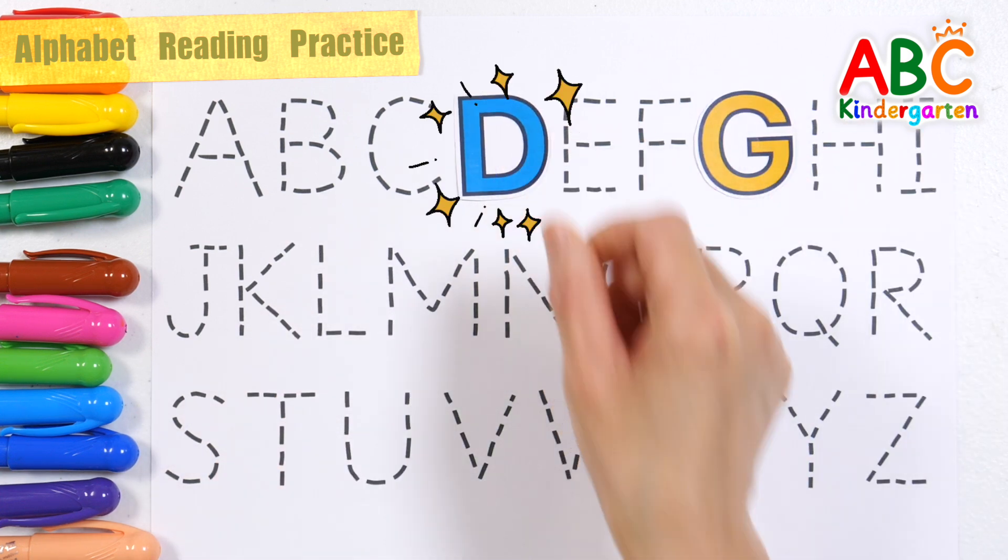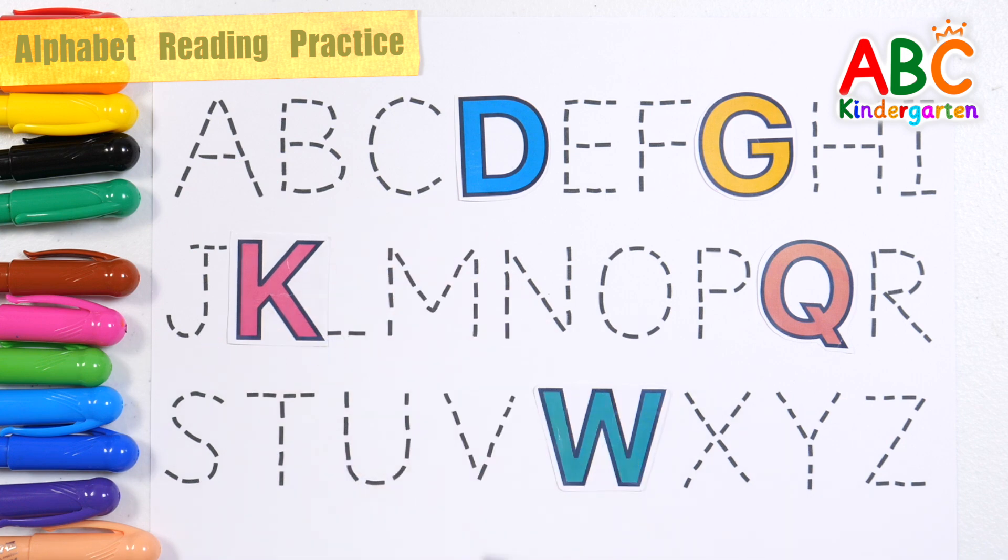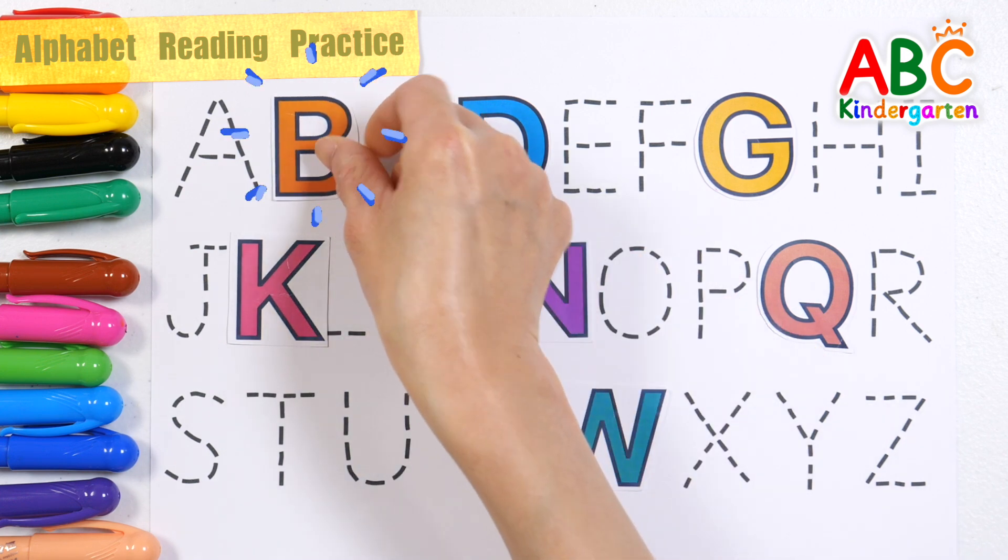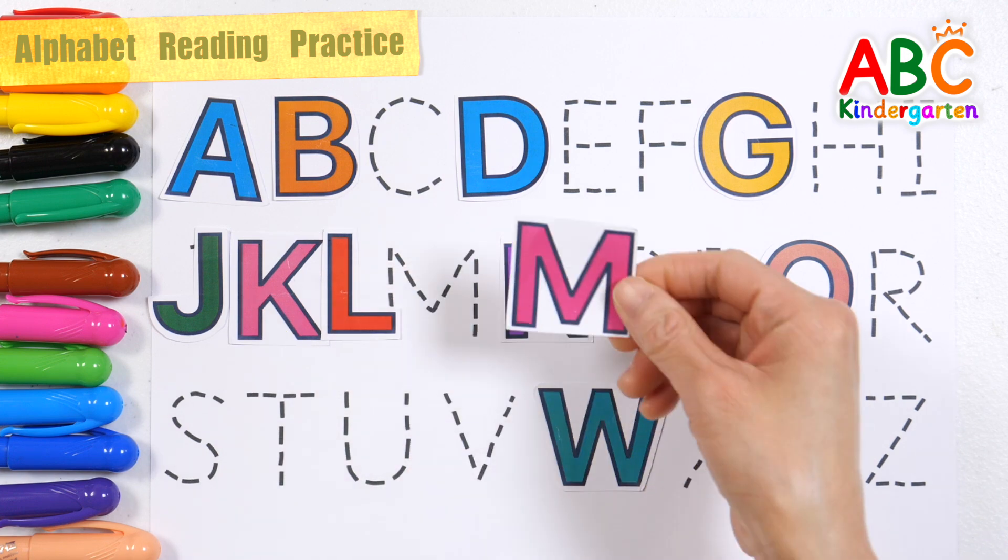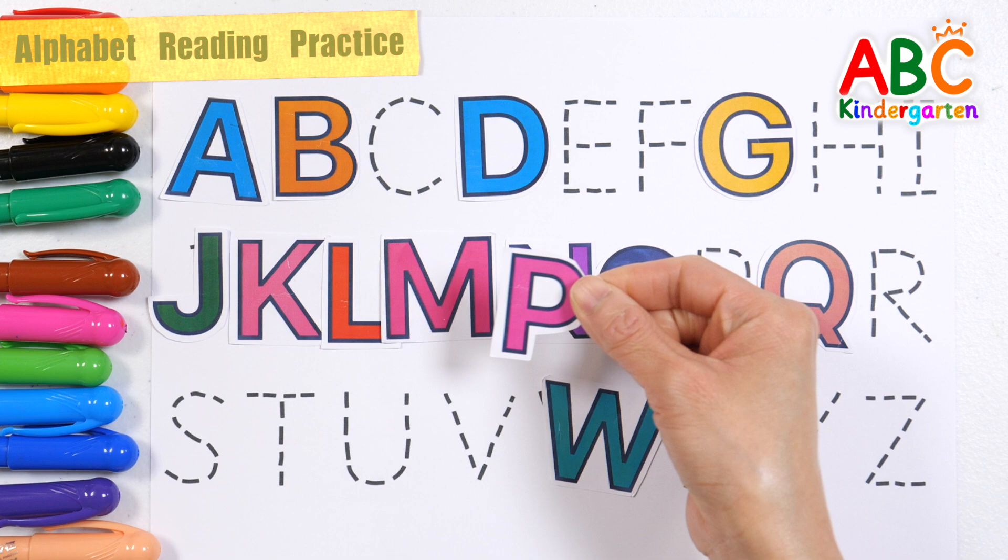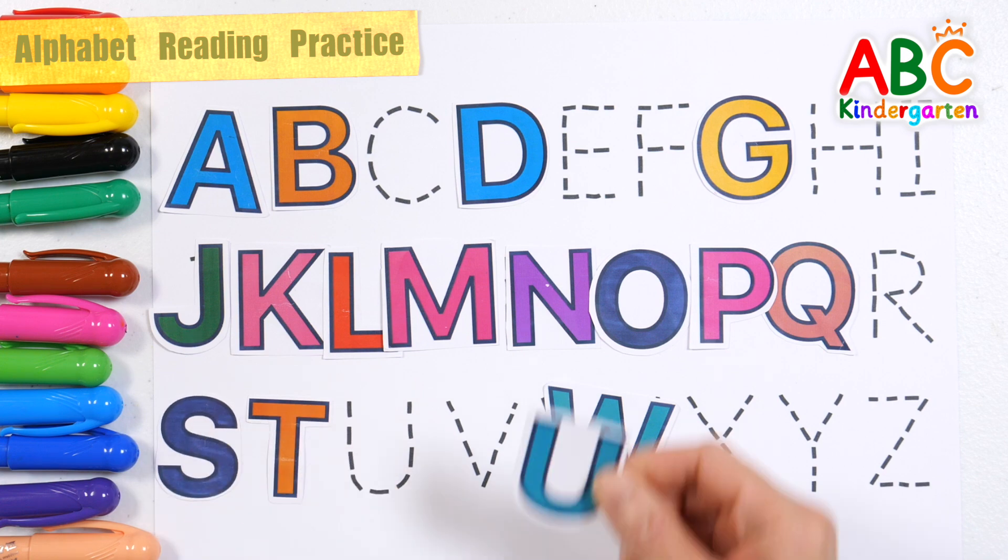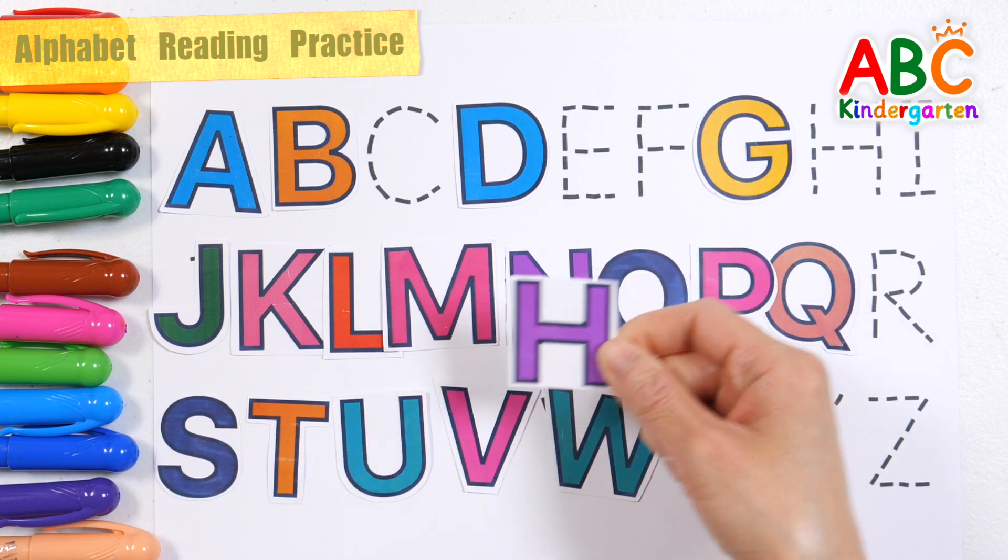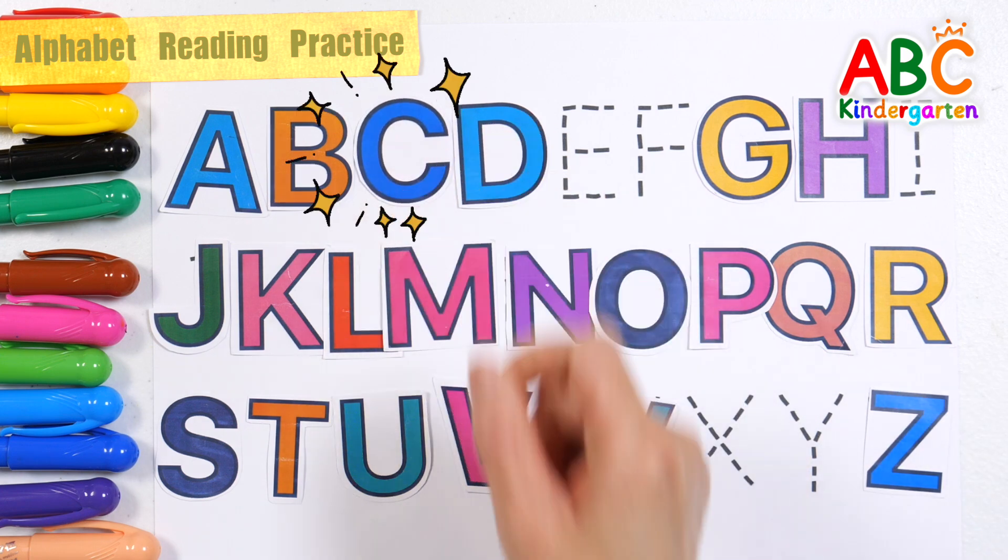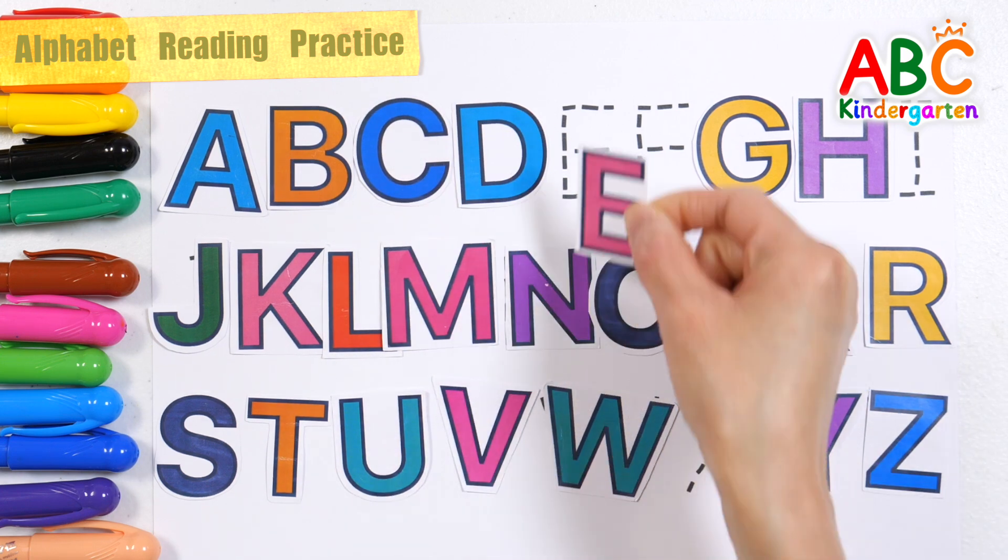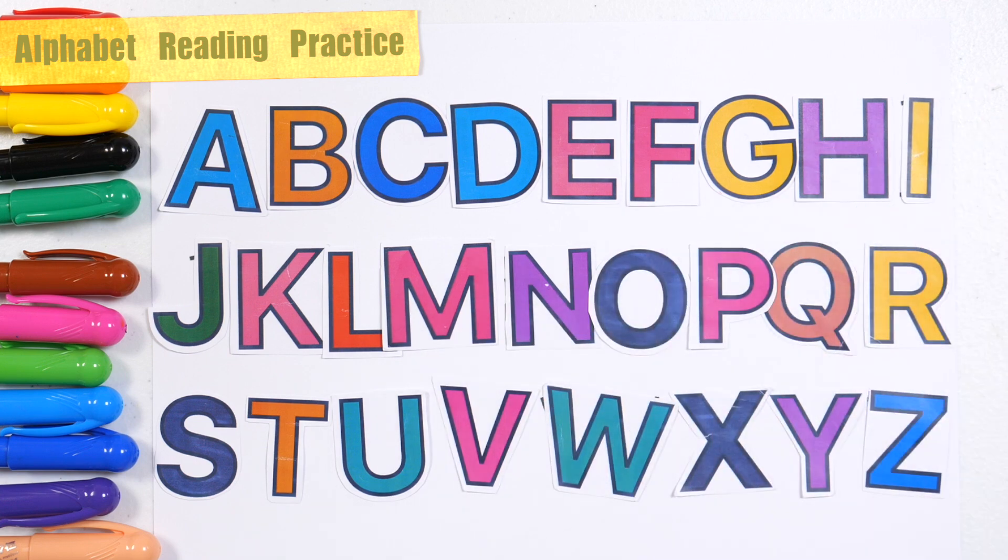The instructor calls out each alphabet letter one by one: G, D, Q, W, K, N, B, A, J, L, M, O, P, Q, R, S, W, X, U, Y, Z, V, H, C, R, C, Y, E, X, F, I. Very good!